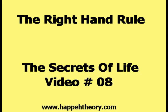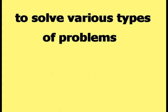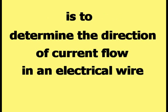This video is about the right hand rule. The right hand rule is a simple technique used in engineering and physics to solve various types of problems. One use of the right hand rule is to determine the direction of current flow in an electrical wire.